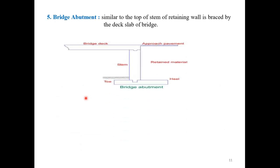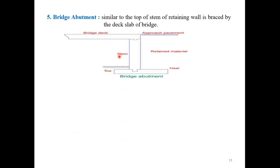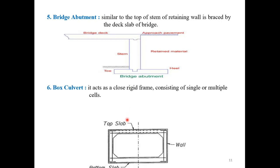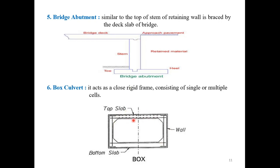Bridge Abutment — you can see in the picture — the bridge abutment is similar in form to a retaining wall where the top of the stem is braced by the deck slab of the bridge. The last type is the Box Culvert, which is a closed rigid frame consisting of single or multiple cells.